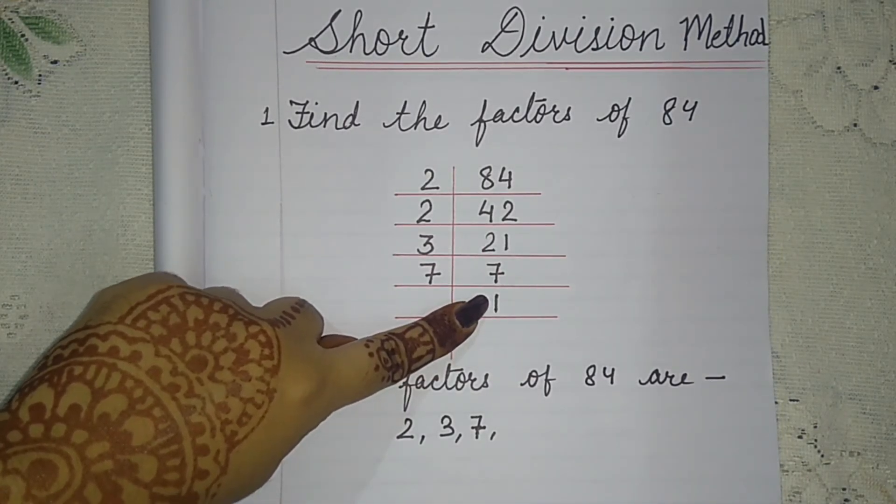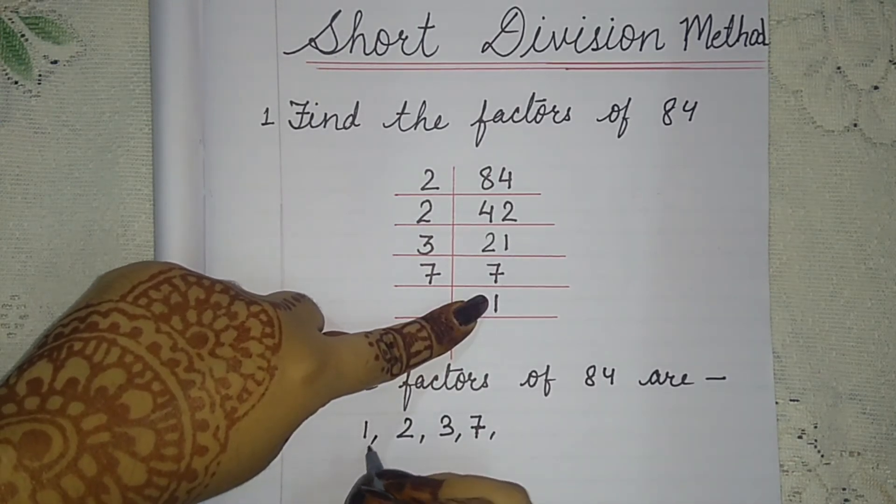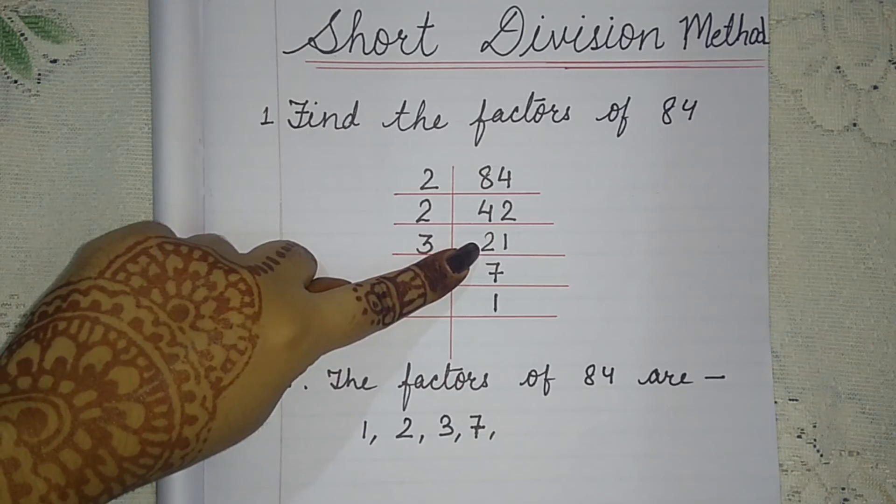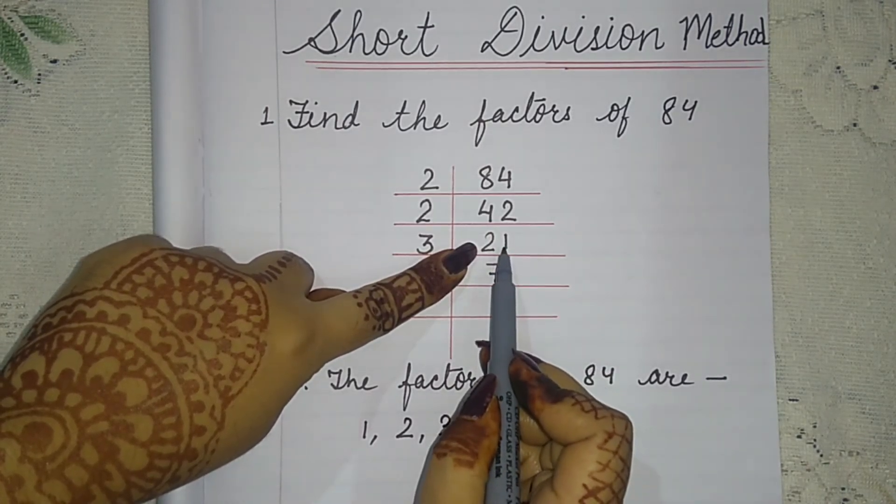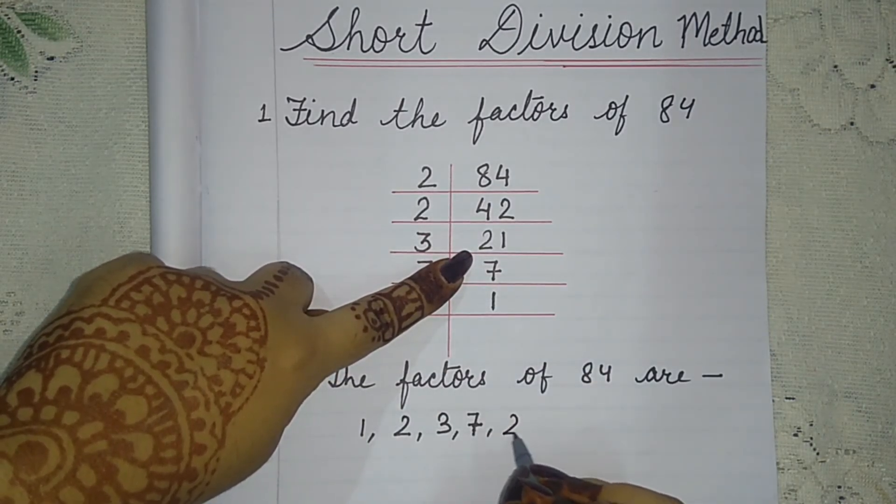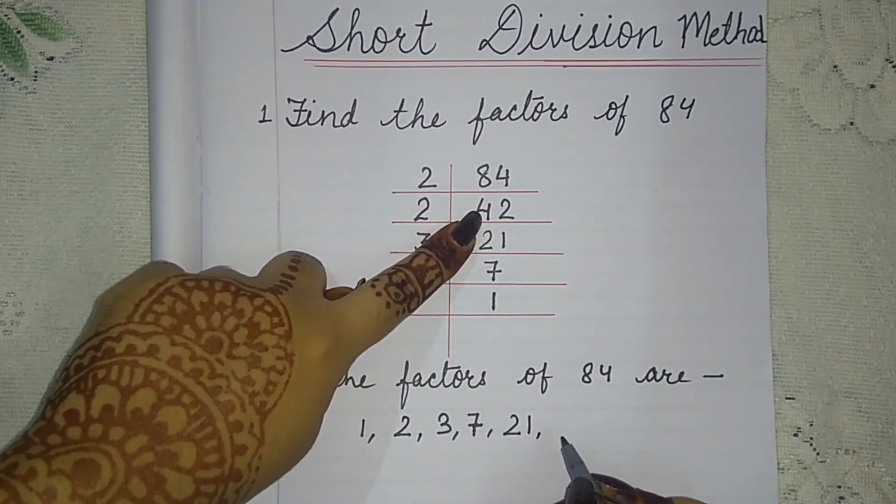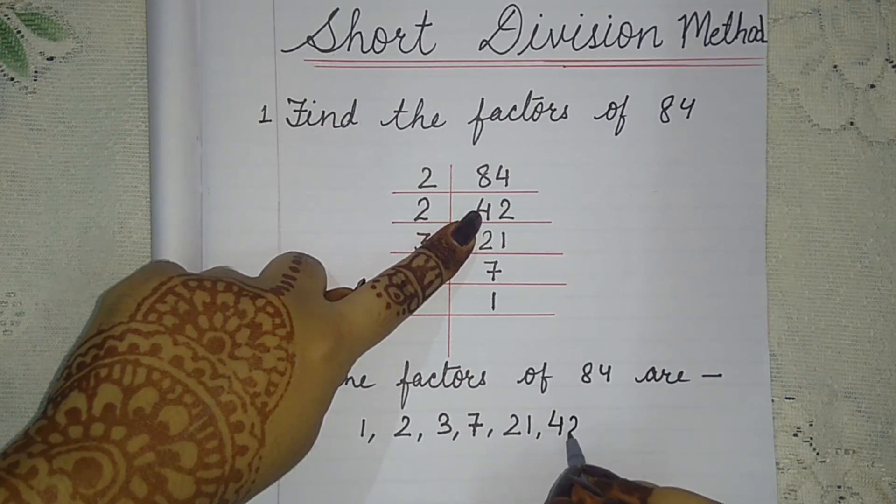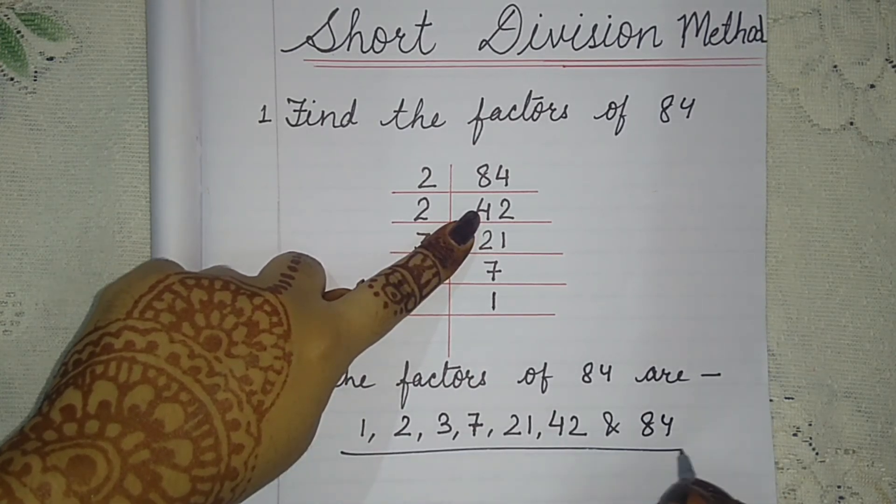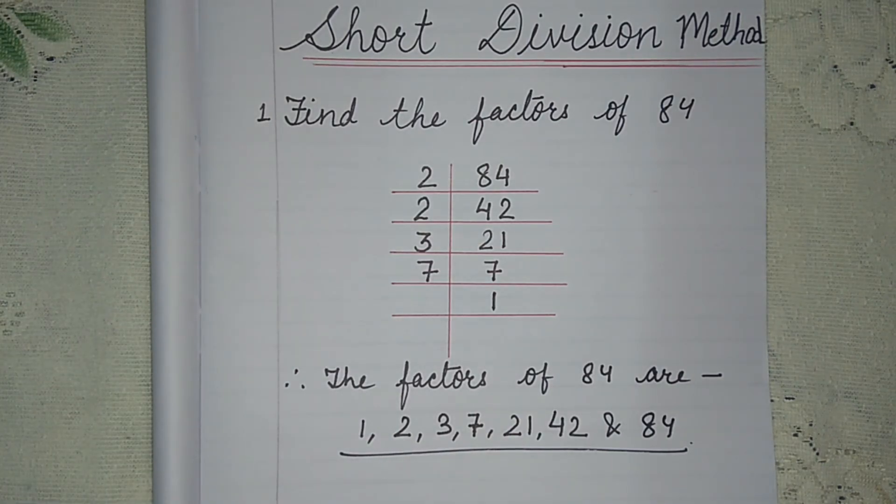One is also a factor. One is a factor of all numbers, so 1 is also a factor. Next we wrote 7. 21 is also a factor, as 21 multiplied by 3 gives 84. So 21, and also 42 is a factor, and 84. All these are the factors of 84. This was the short division method.